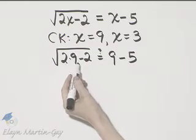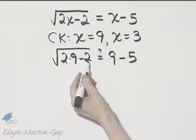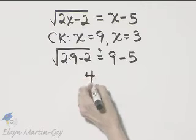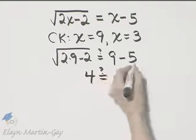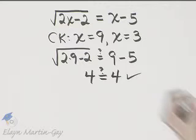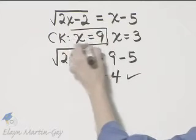Well, let's see, 2 times 9 is 18. 18 minus 2 is 16 and the square root of 16 is 4. 9 minus 5 is 4. That is true, so 9 checks.